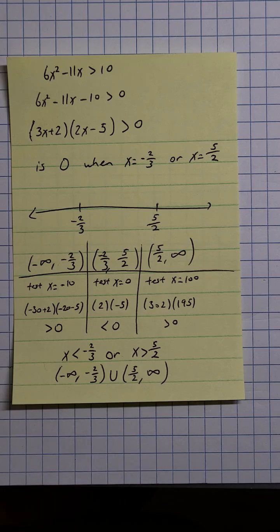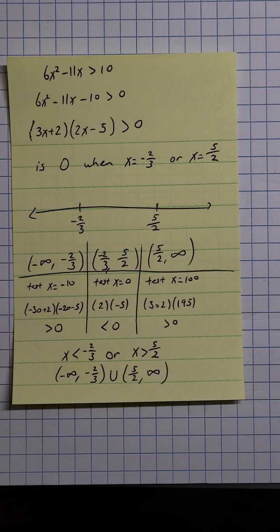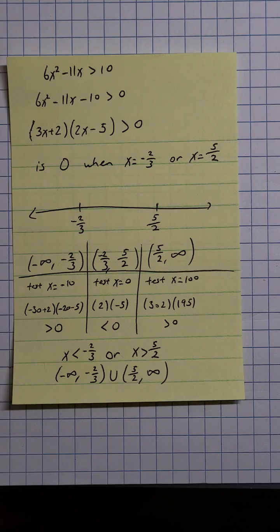If something is greater than zero, it's positive in value. If it's less than zero, it's negative in value. So if you use zero as the reference and you just check if things are positive or negative, that's a good technique. And that's what we're going to do for this quadratic inequality we have on screen here. You'll also do this for trig ones as well.